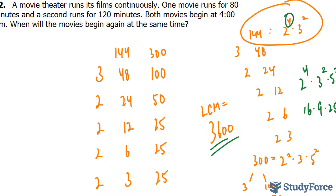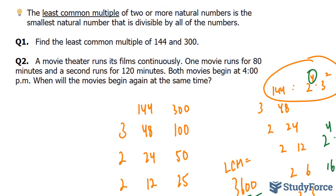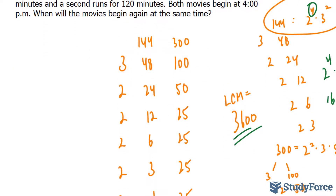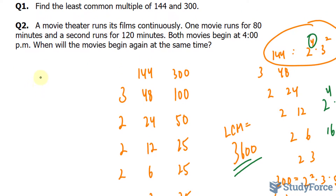Let's move on to the next question, which is a word problem. A movie theater runs its films continuously. One movie runs every 80 minutes, and a second runs every 120 minutes. Both movies begin at 4 p.m. When will the movies begin again at the same time? You can use either method — I'm going to use the division ladder.